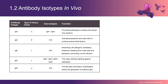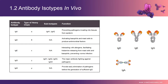The sequence of the heavy chain defines the class of Ig, such that gamma, alpha, mu, delta, and epsilon heavy chains define immunoglobulins IgA, IgD, IgE, IgG, and IgM classes respectively, each with a distinct role in the human adaptive immune system. The light chains are either kappa or lambda isoforms for all classes.